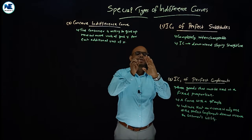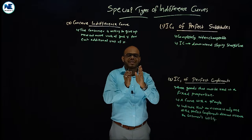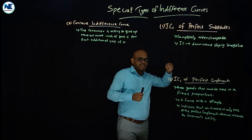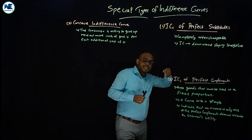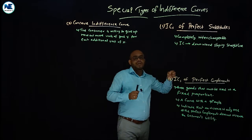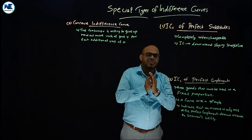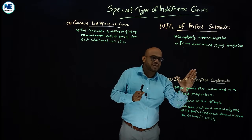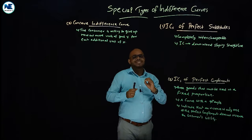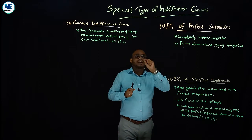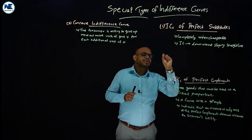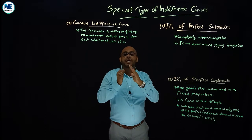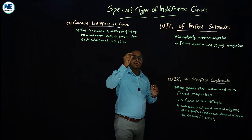The usual shape of indifference curves is convex to the origin. It has a negative slope. The slope of an indifference curve is MRS — Marginal Rate of Substitution. That is the same thing we will discuss: Diminishing Marginal Rate of Substitution. Watch the previous part thoroughly, the concepts are nice.